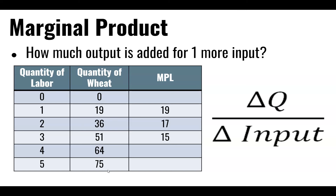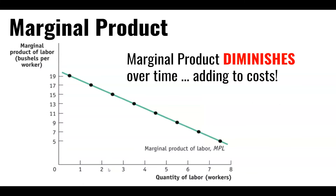The third worker leads production from 36 to 51 bushels, meaning that third worker is adding 15 to the total. Marginal product tends to diminish over time, which means that as we add more laborers, it becomes increasingly more expensive to produce the same increase in total output. That diminishing nature of marginal product does cause our costs of production to rise over time.